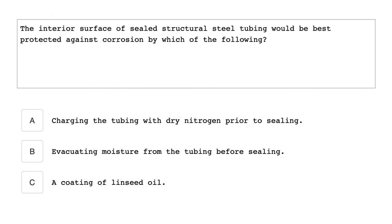The interior surface of a sealed structure steel tubing will be best protected against corrosion by which of the following? A coating of linseed oil.